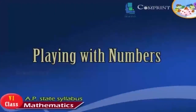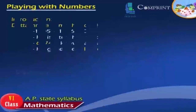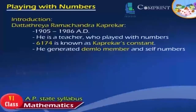Playing with Numbers. Introduction: Dattatreya Ramachandra Kaprekar (1905–1986 AD) was a teacher who played with numbers. 6174 is known as Kaprekar's Constant. He also generated Demlo Numbers and Self Numbers.